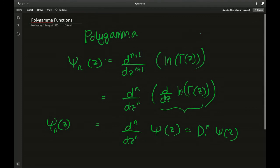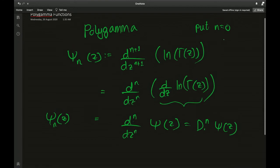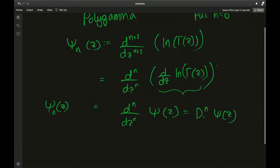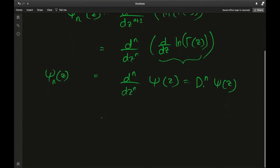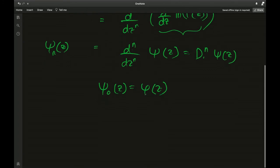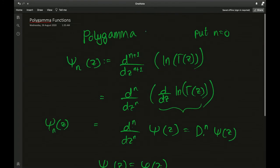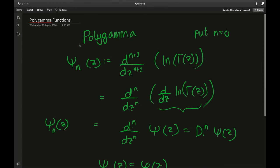If you put n equals 0 in this formula, you'll end up with just the digamma function. So another interesting thing to notice: polygamma of order zero is actually the digamma function. You could write the digamma with a subscript of 0 to denote that it's a polygamma of order zero.